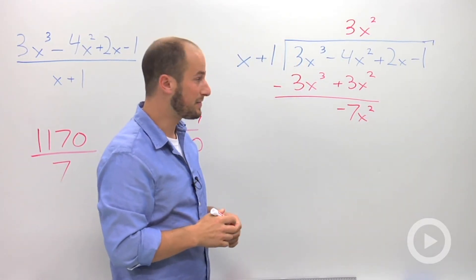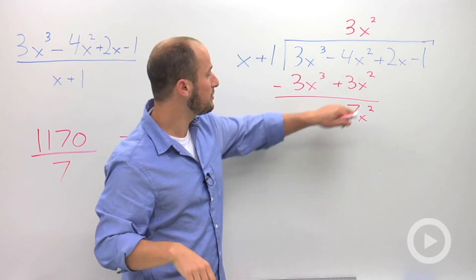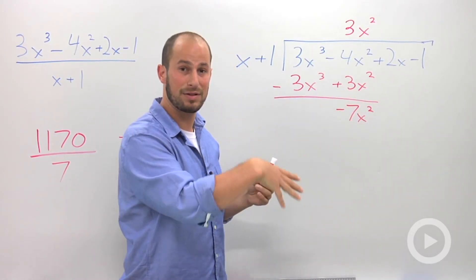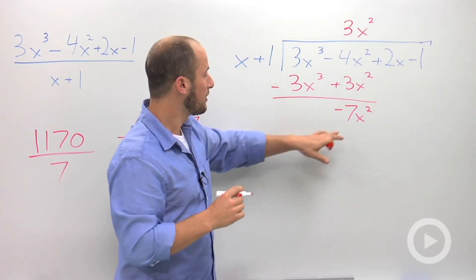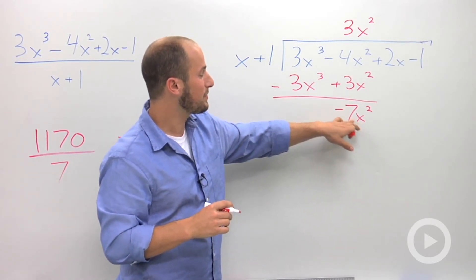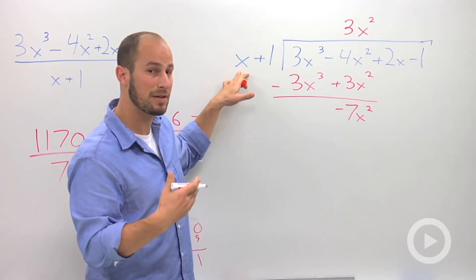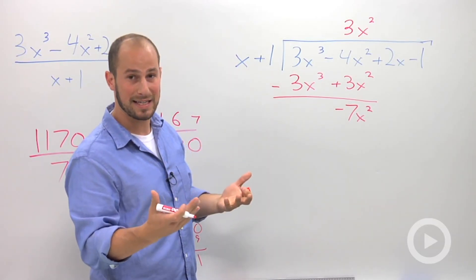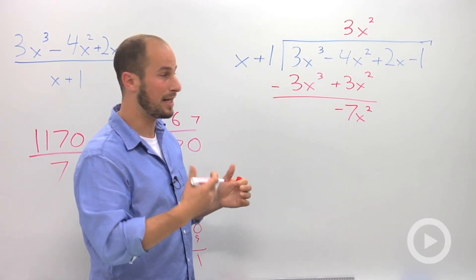That's the next term we want to get rid of, is negative 7x squared. If you want to bring this down, you can. You don't have to, just remember that we need to include it next up when we subtract. Okay? So, we need to get rid of the negative 7x squared with our leading term of an x. So we need to multiply our x by negative 7x in order to cancel it out.